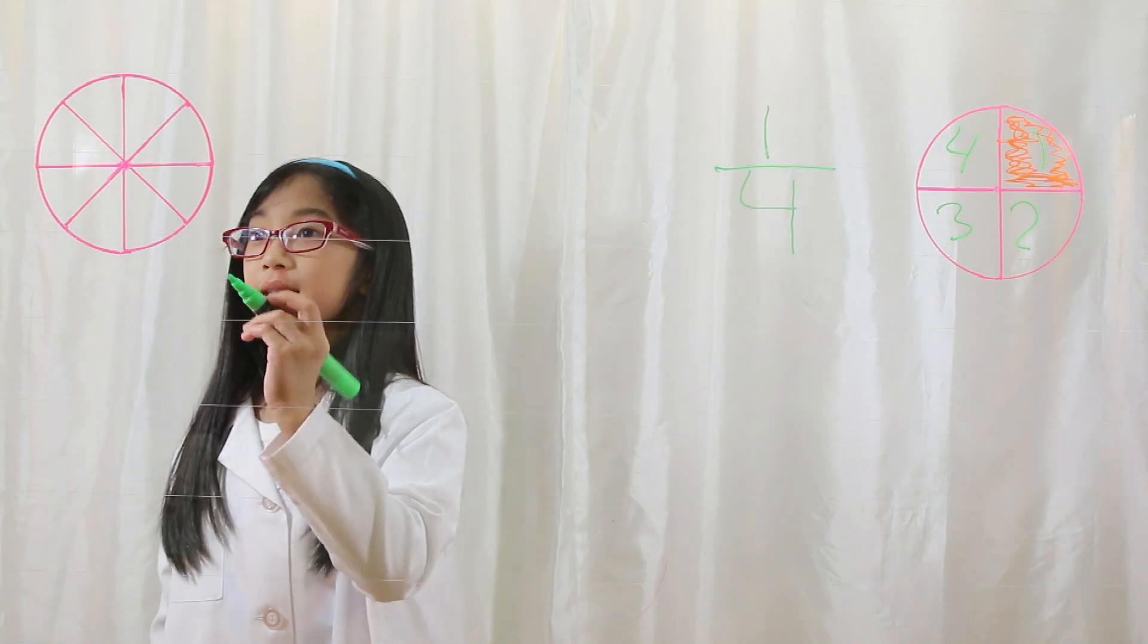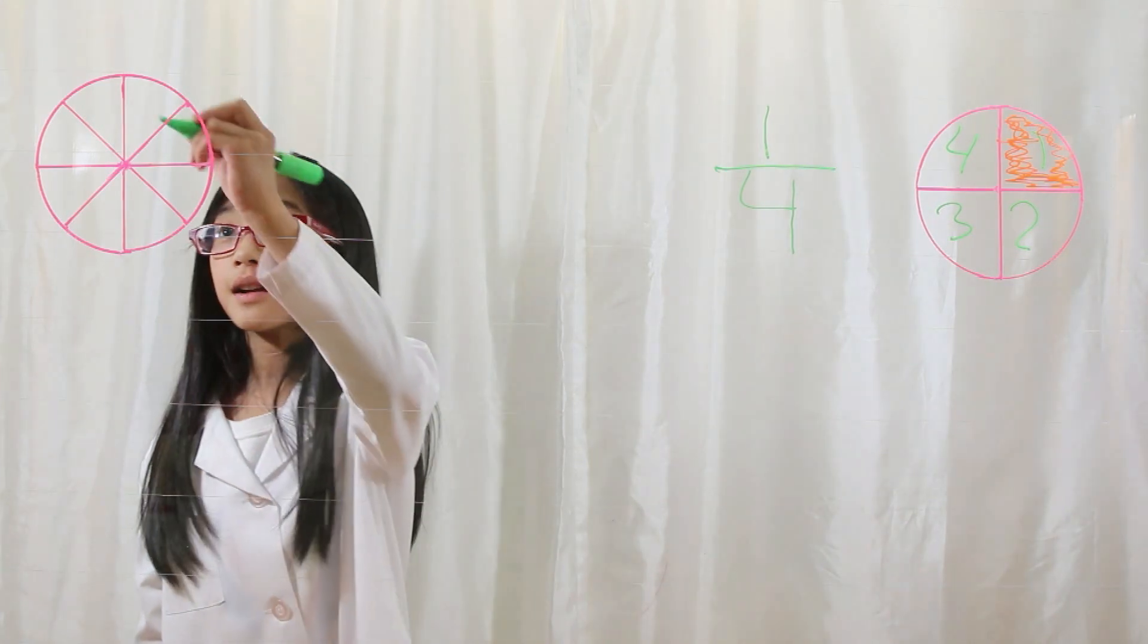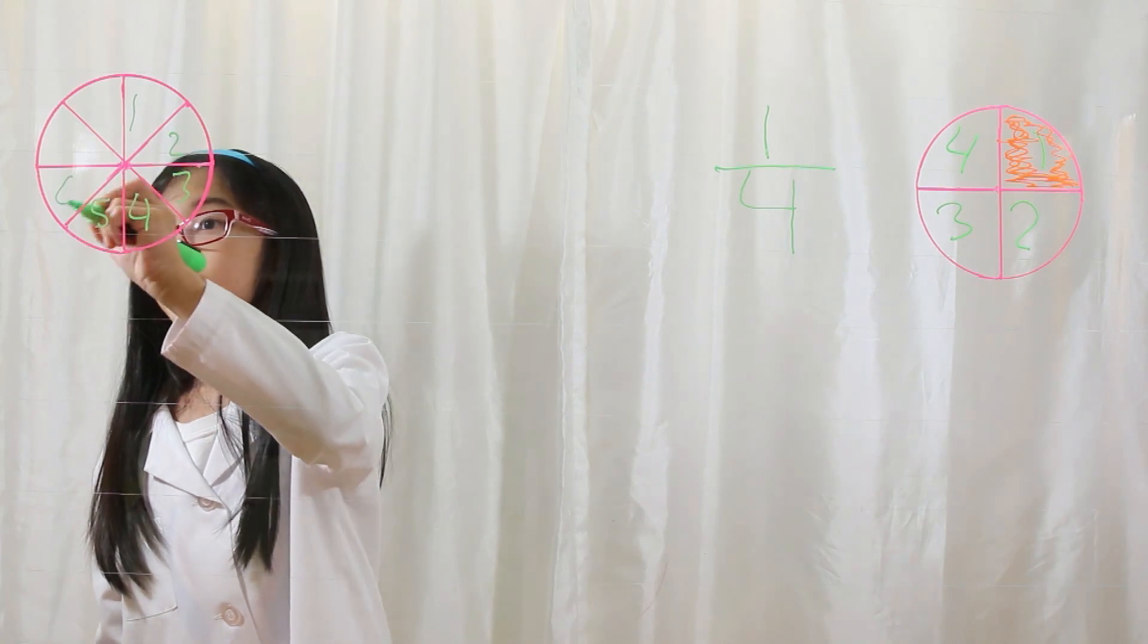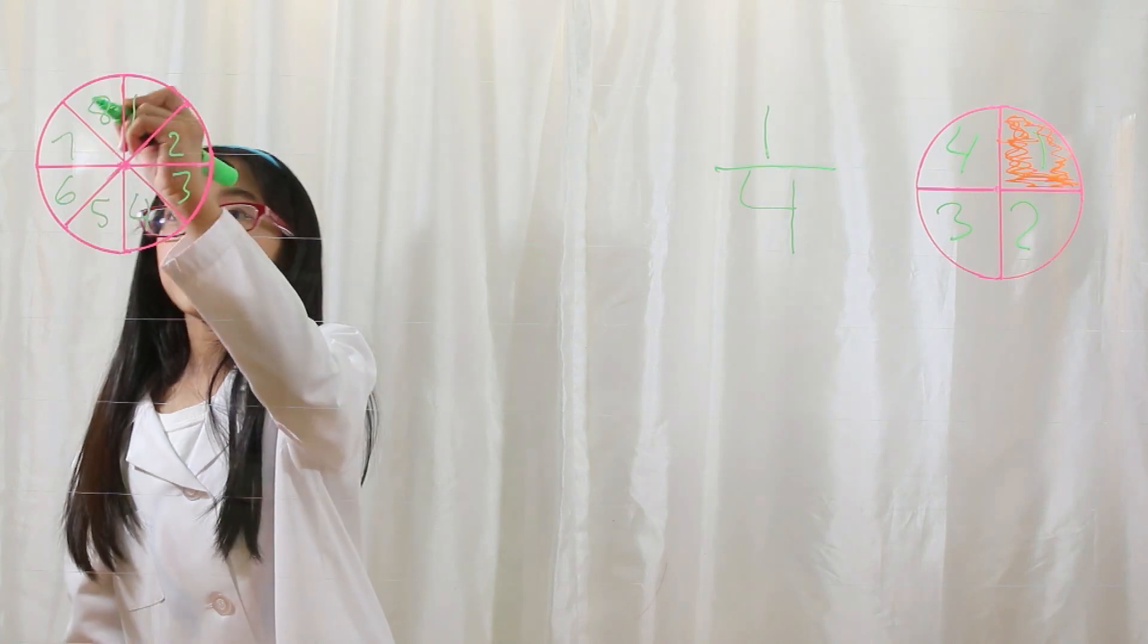Let's look at this pie. How many pieces are there? One, two, three, four, five, six, seven, eight pieces.